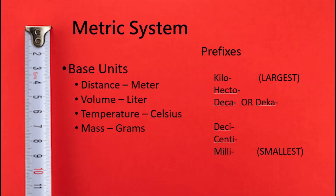As a review, in the metric system we do have base units. This includes meters for distance, liters for liquid volume, Celsius when it comes to temperature, and grams for mass. These are base units.